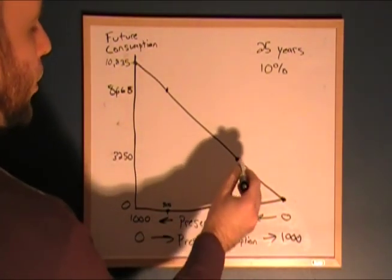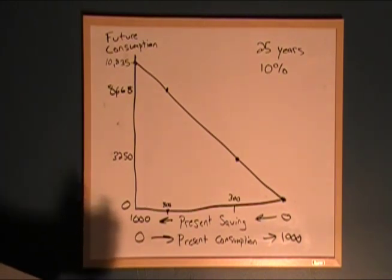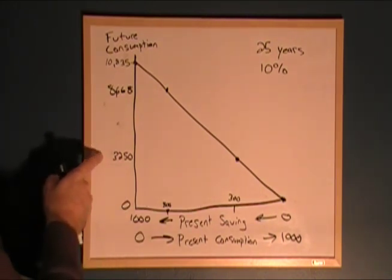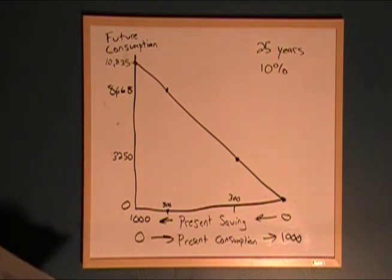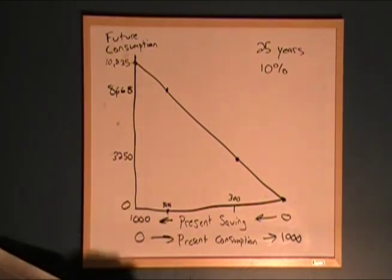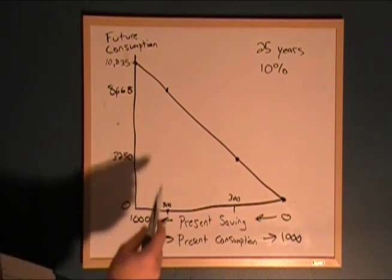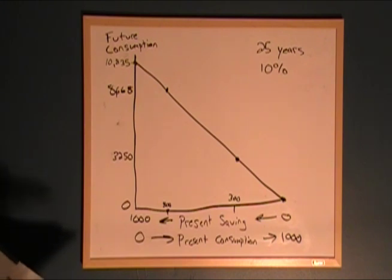If we choose this point, that means we're going to consume $700 worth of goods and services now, and in 25 years we'll be able to consume $3,250 of goods and services. And here, we're consuming $200 worth of goods and services now, so in the future we can consume $8,668 worth of goods and services.